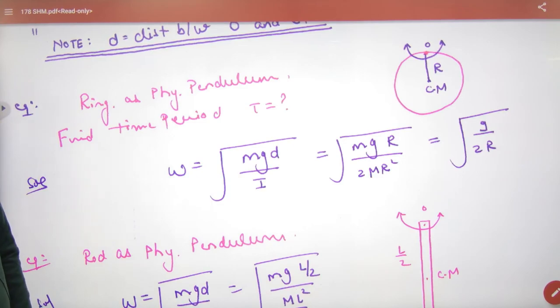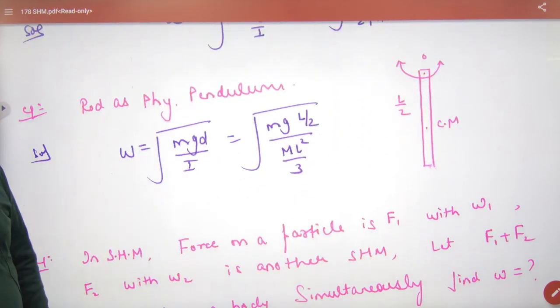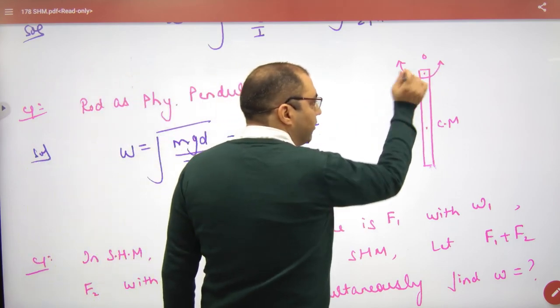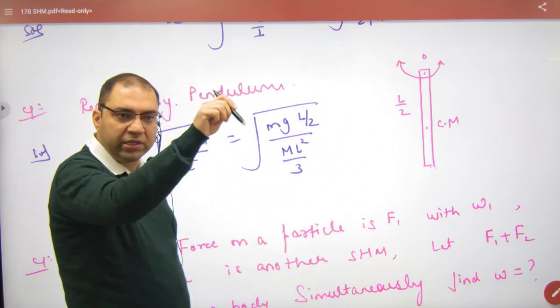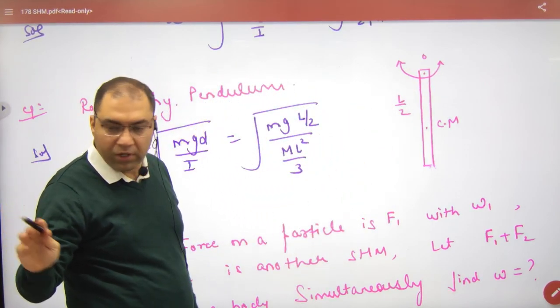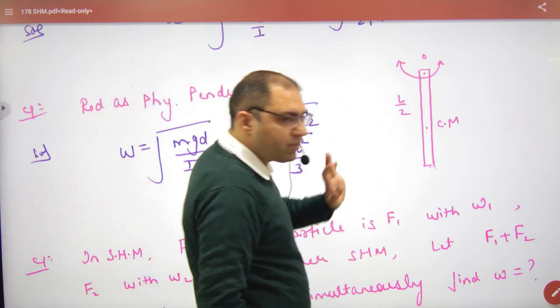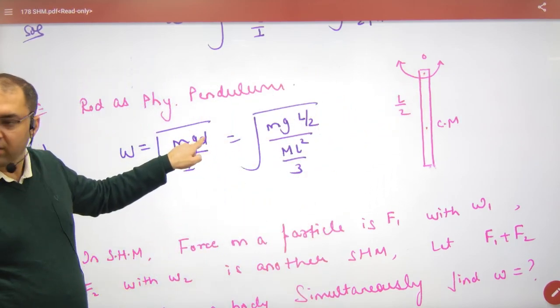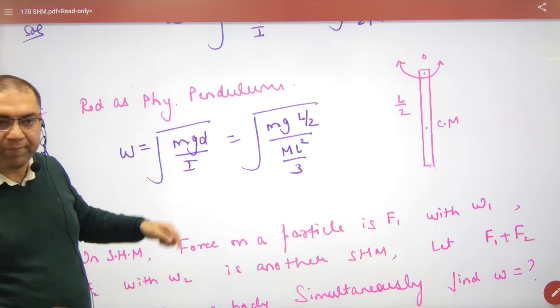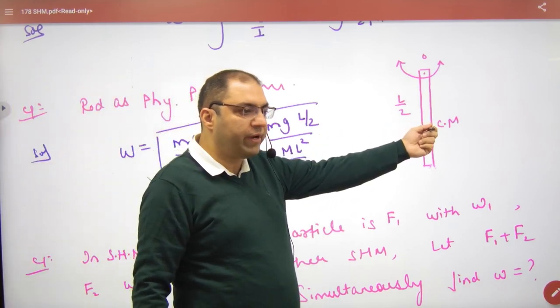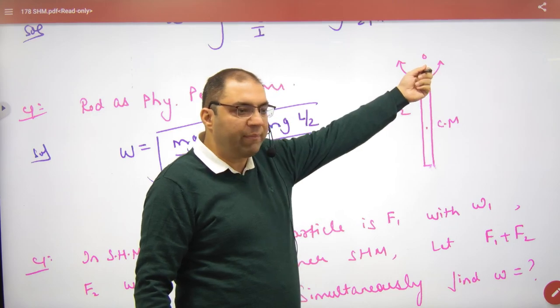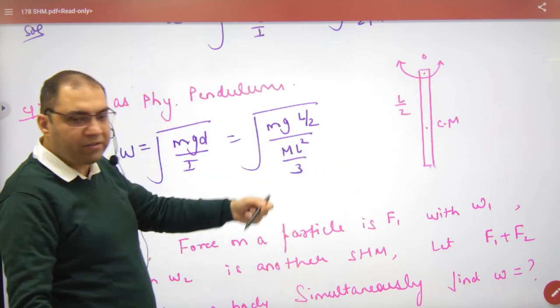Suppose one rod is. You have tied a rod here from the nail. Now they are oscillating it. Physical pendulum. So what is the distance between the center of mass and the distance? L by 2. So what is d? L by 2. So I is about ML squared by 12. And the tangent is about ML squared by 3. So I is about ML squared by 3. Answer.